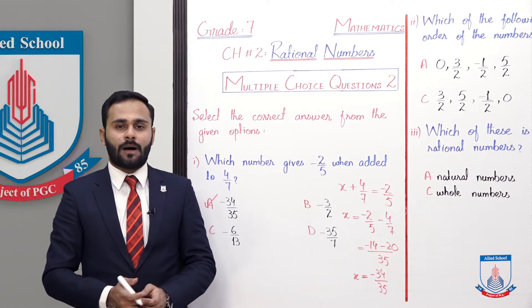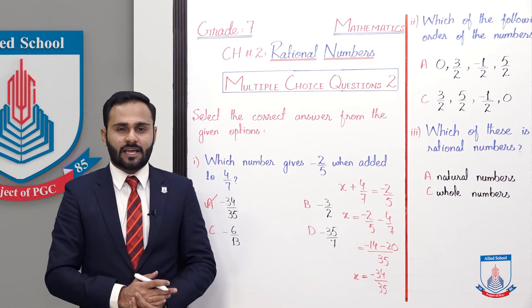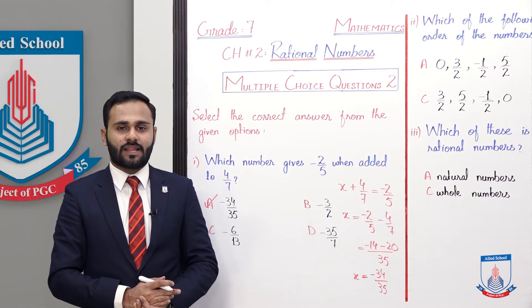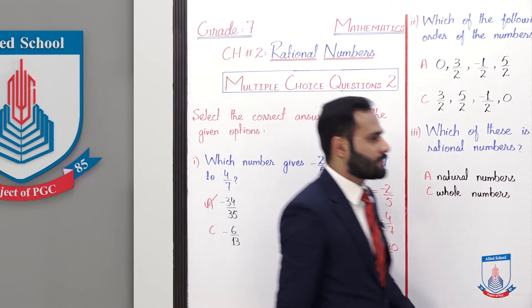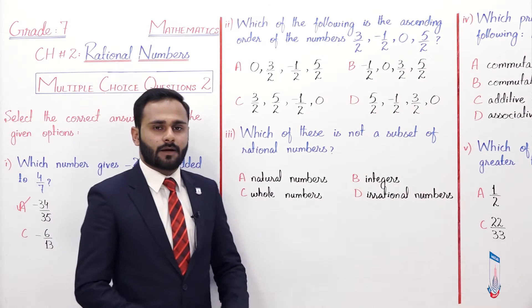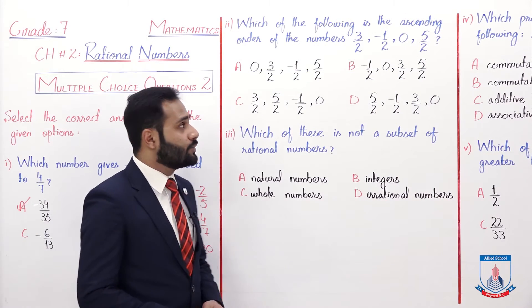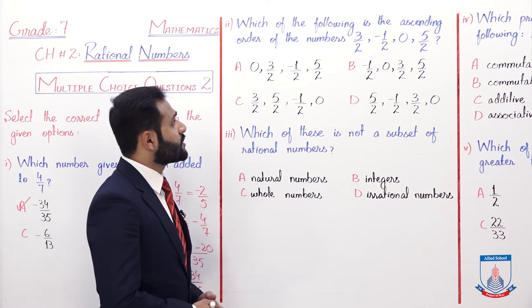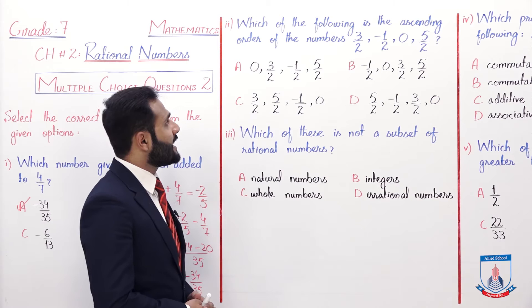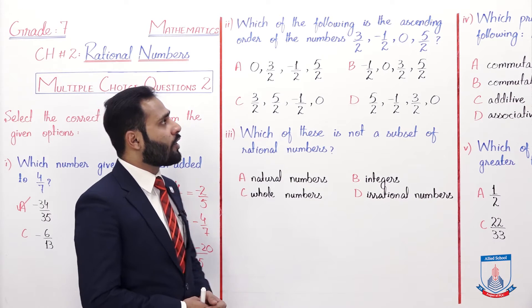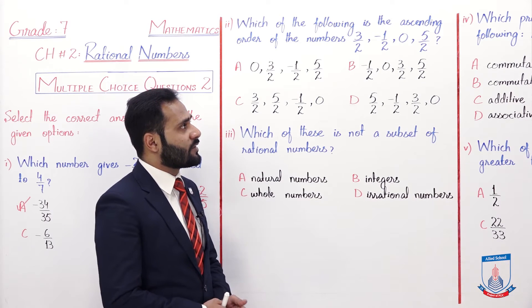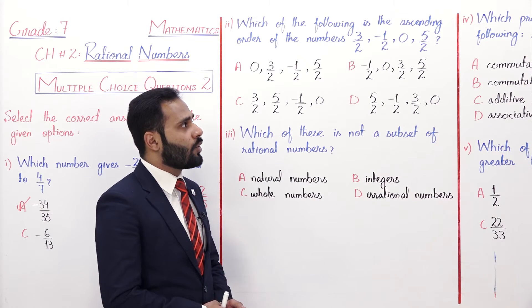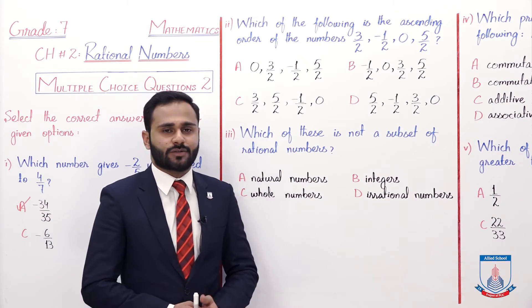The correct option is A, which is minus 34 by 35. I hope yeh MCQ aap ko samajh aa gaya hoga. Now move to the next MCQ. MCQ number 2: Which of the following is the ascending order of the numbers 3 by 2, minus 1 by 2, 0 and 5 by 2?